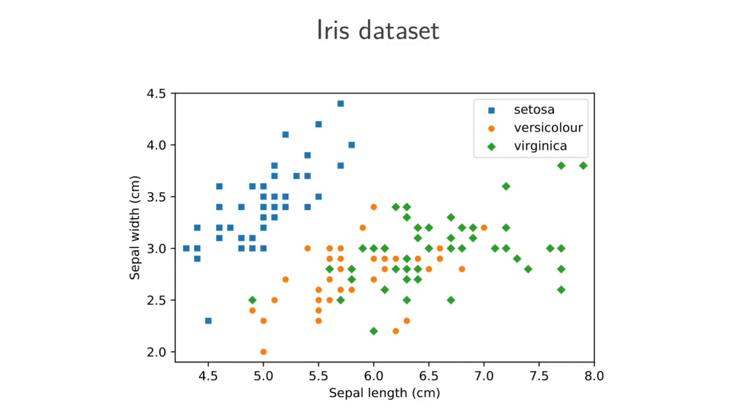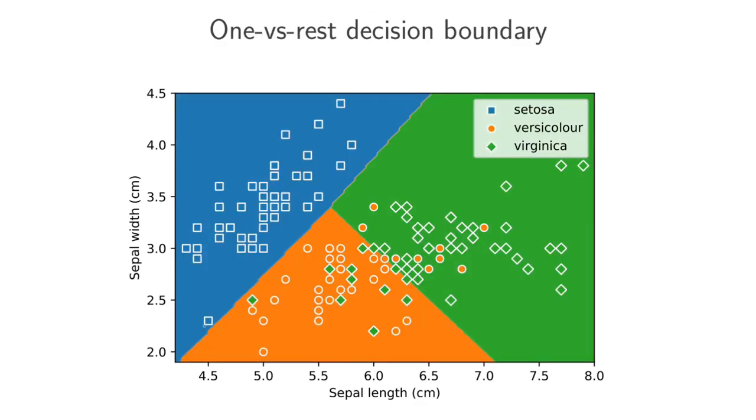When I do a one-versus-rest classification, then the output of the model looks something like this. Here I've just drawn the different decision boundaries, and you can see a very nice separation of setosas, virginicas, and versicolors.